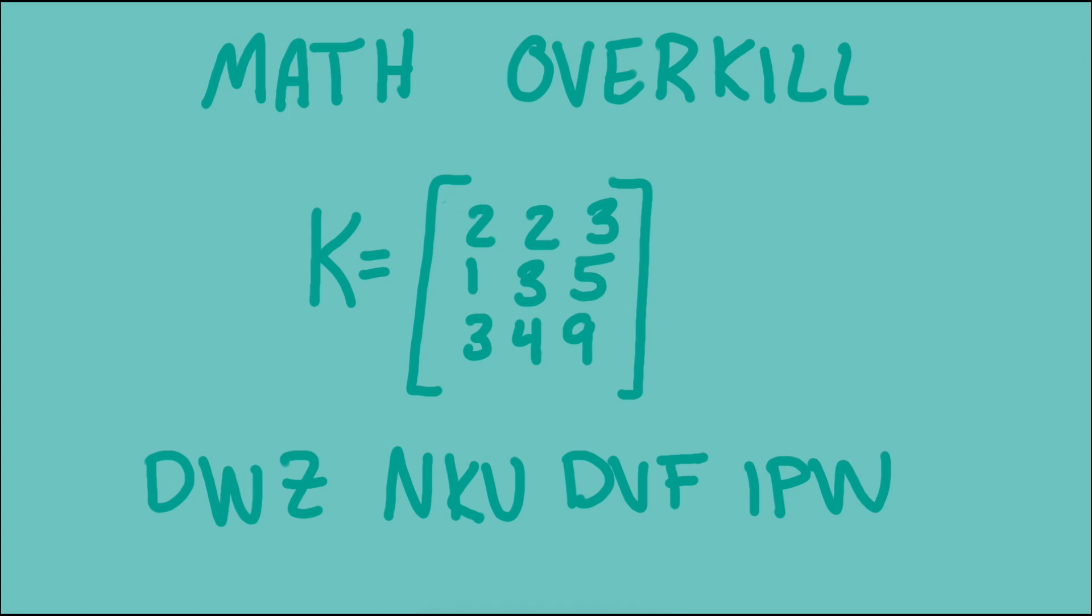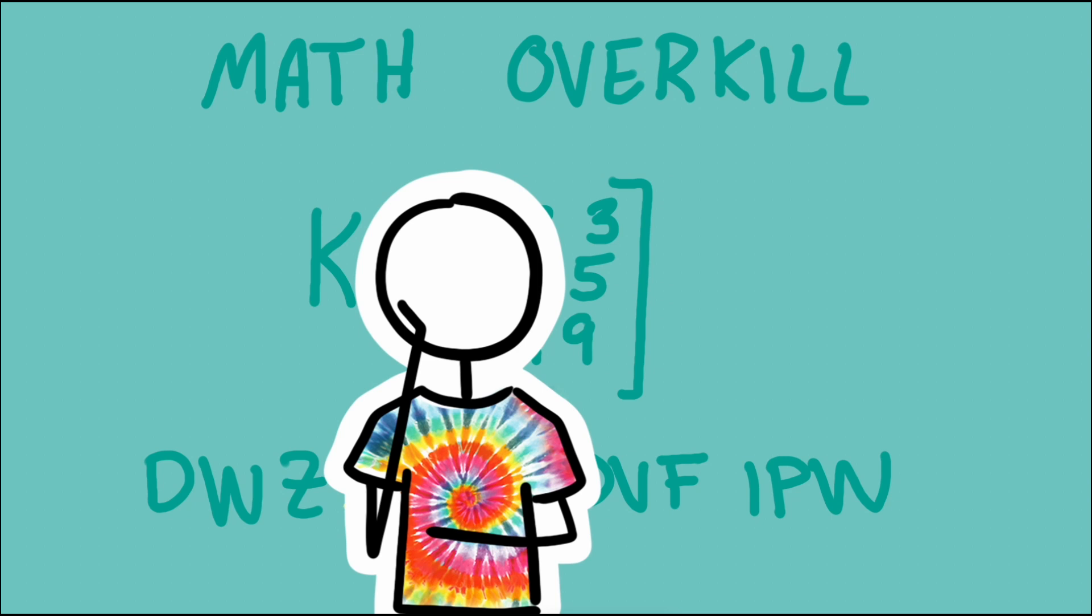Here's a bit of a challenge. Can you figure out how matrix multiplication could be used to reverse engineer the secret key? Tell us your ideas in the comments. Let us know if you'd like to see a video that unpacks that process.